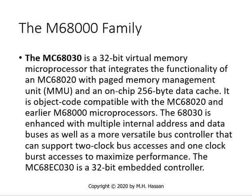The M68030 is a 32-bit virtual memory microprocessor that integrates the functionality of the MC68020 with paged memory management, MMU, and an on-chip 256-byte data cache. It is object code compatible with the 68020 and earlier 68000 microprocessors. The 68030 is enhanced with multiple internal buses and more versatile bus controllers that can support 2-clock and 1-clock bus accesses to maximize performance. The MC68EC030 is a 32-bit embedded controller.